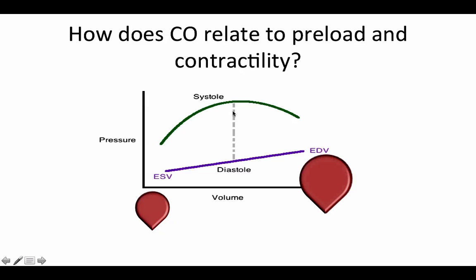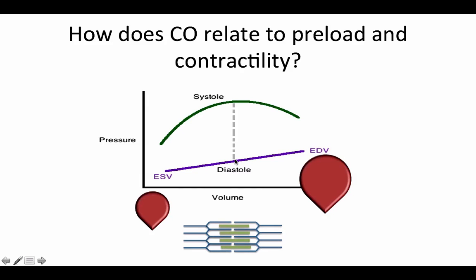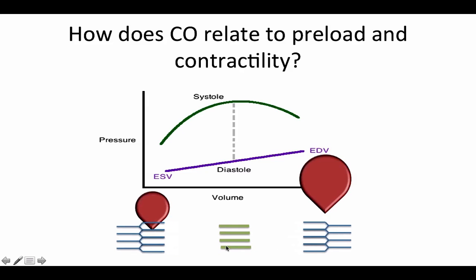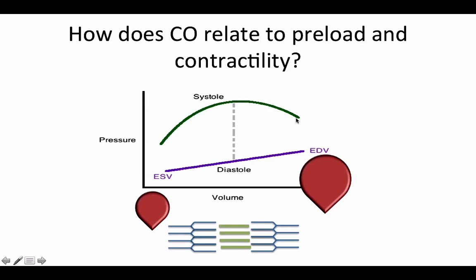So why does it drop off right here? After this gray line, cardiac output or your systolic pressure will drop because, remember, your actin and myosin chains have an optimum length. So as your volume increases, this actin and myosin chain will also increase. Increasing the distance between these two will cause increased contractility. However, there's an optimum length, so if you overshoot it, that contractility is going to actually decrease, and therefore your systolic pressure won't be as effective and you'll have decreased cardiac output. Thus, this gray line represents your optimum actin and myosin fiber length.